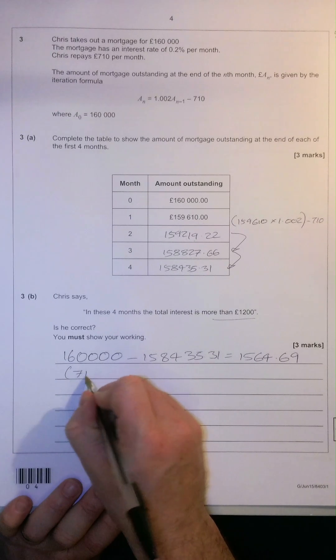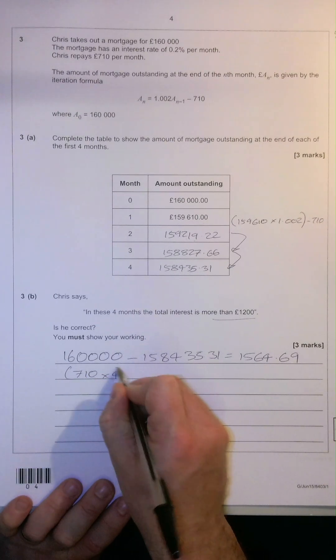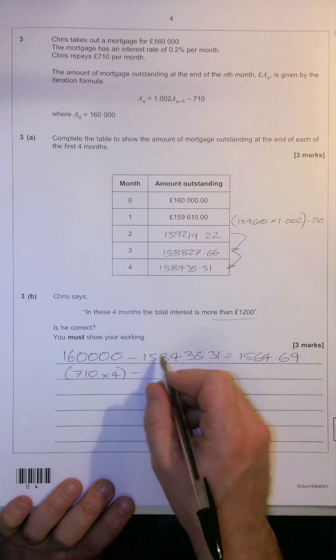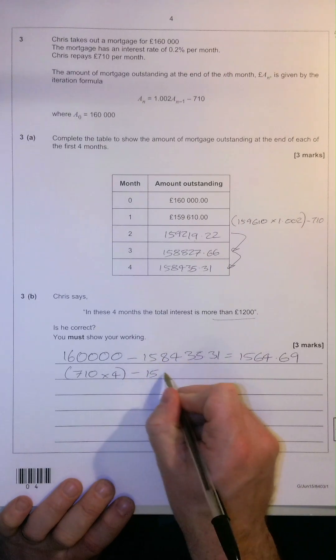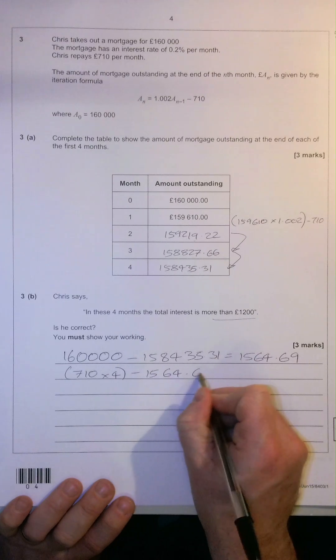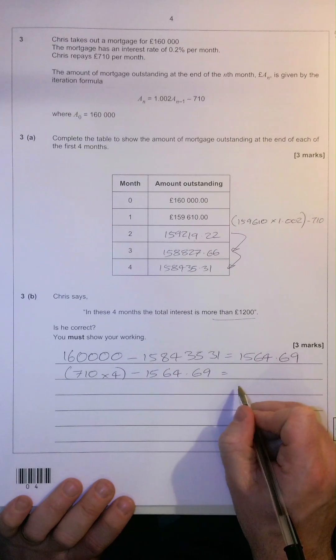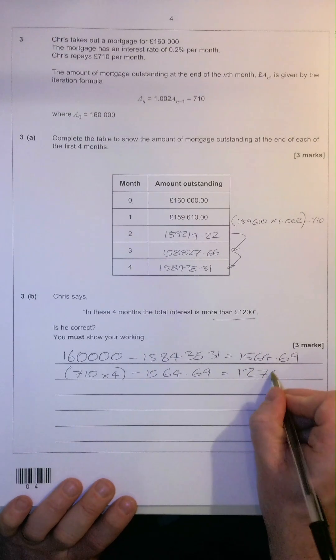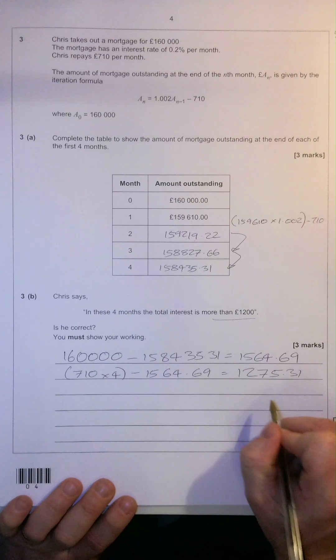So how much did he pay off? $710 times four, and then we're going to take off the amount he has actually paid off, £1,564.69, and that will leave us with actually the amount of interest that he's had to pay, £1,275.31.